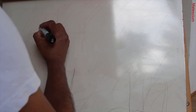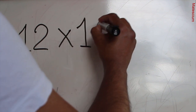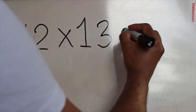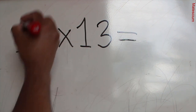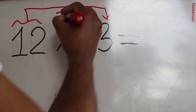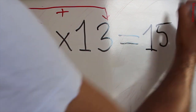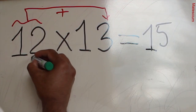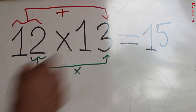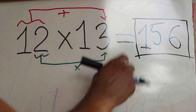I have a bonus trick for you. By using this trick you can multiply certain numbers in a very short time. Let's say 12 times 13. What you have to do is add the first number with the second number: 12 plus 13 equals 15 — write 15 here. Then multiply the second digit of each number: 2 times 3 is 6. That means 12 times 13 is equal to 156.